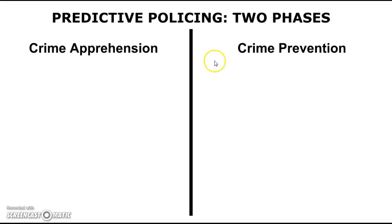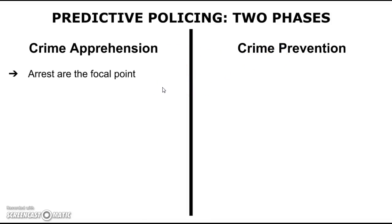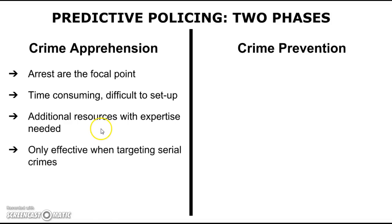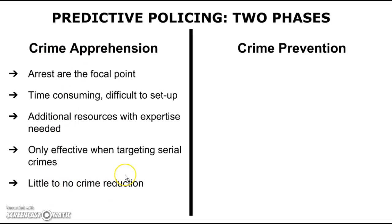Predictive policing has two major phases: crime apprehension and crime prevention. When you focus on crime apprehension, arrests are the focal point. It is time-consuming and difficult to set up. You need additional resources with expertise, and it is only effective when you target serial crimes. Crime apprehension will lead to very little, if any, crime reduction.